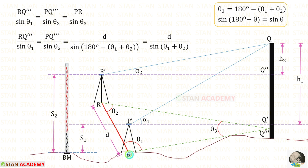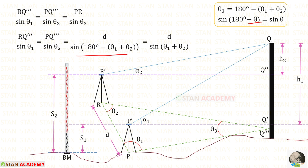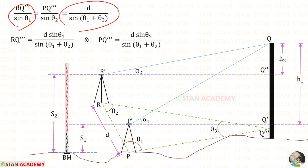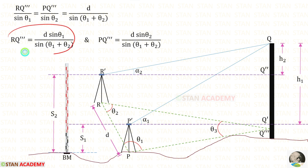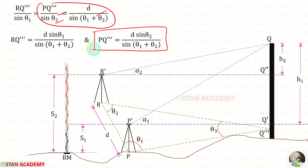The horizontal distance PR is kept as D, so instead of PR we apply D. For theta 3 we apply 180 minus bracket theta 1 plus theta 2. We remember the formula: sine of 180 minus theta equals sine theta. Applying this with theta 1 plus theta 2, we get sine of theta 1 plus theta 2. From these, for R Q triple dash we get the expression D times sine theta 1 divided by sine of theta 1 plus theta 2, and for P Q triple dash we get D times sine theta 2 divided by sine of theta 1 plus theta 2.